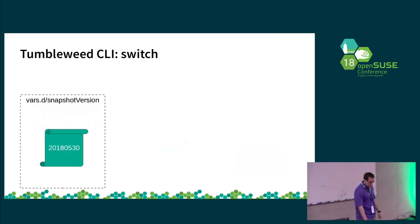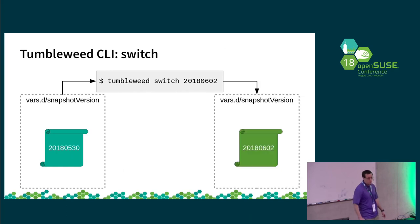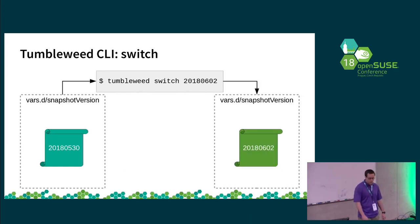To ease that, the command line tool allows you to execute the switch command and specify whatever version you want to switch to. It simply modifies the contents of that file, which effectively changes which repository you're pointing at.